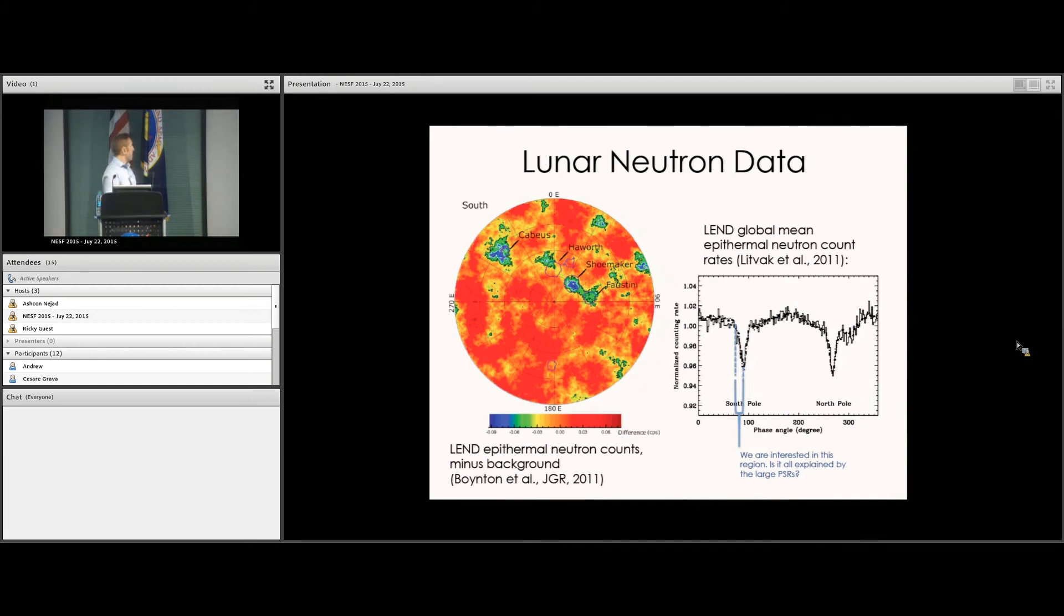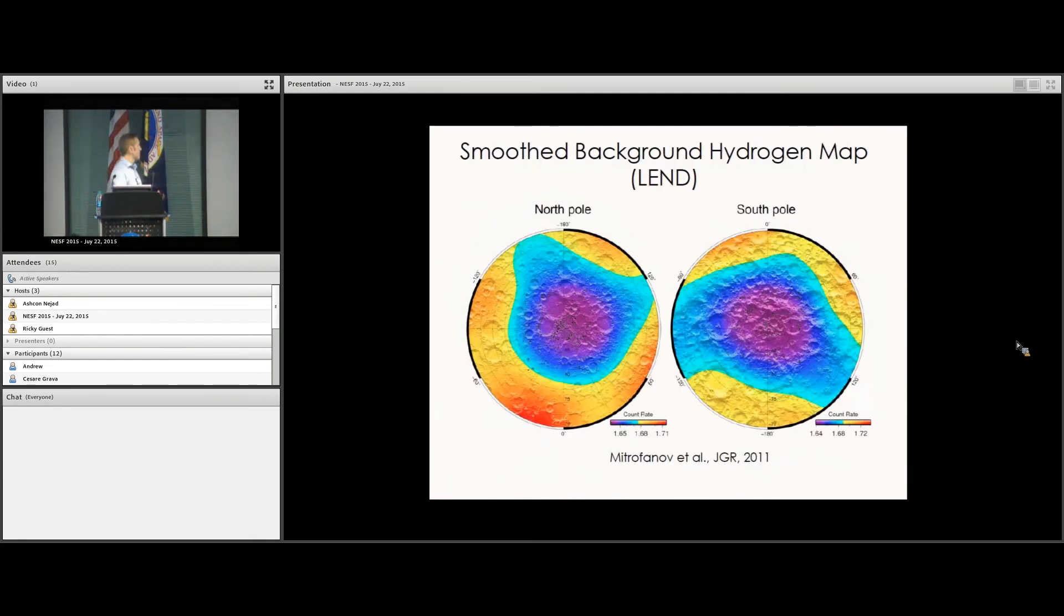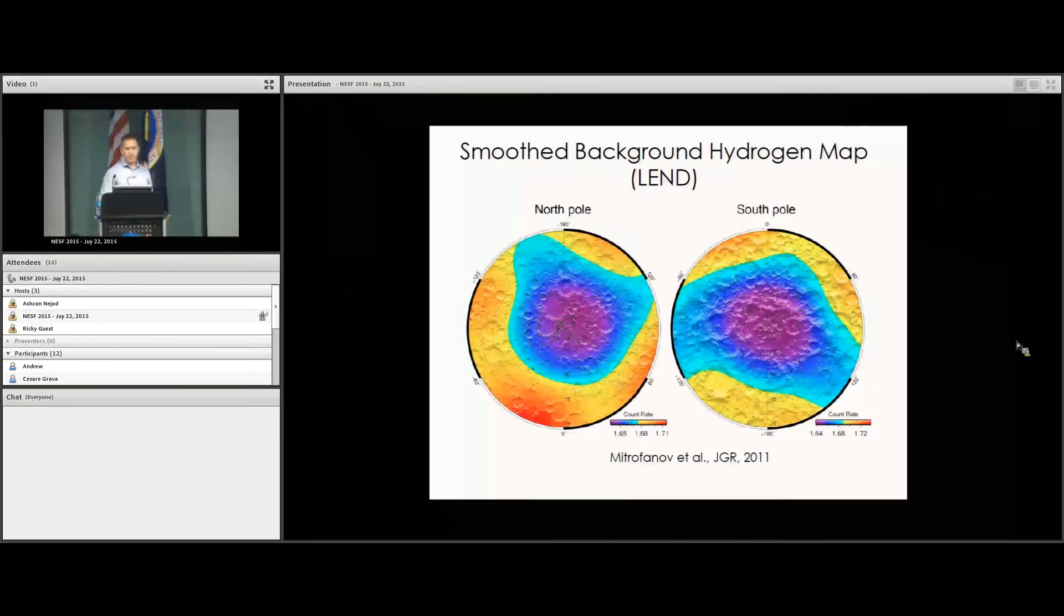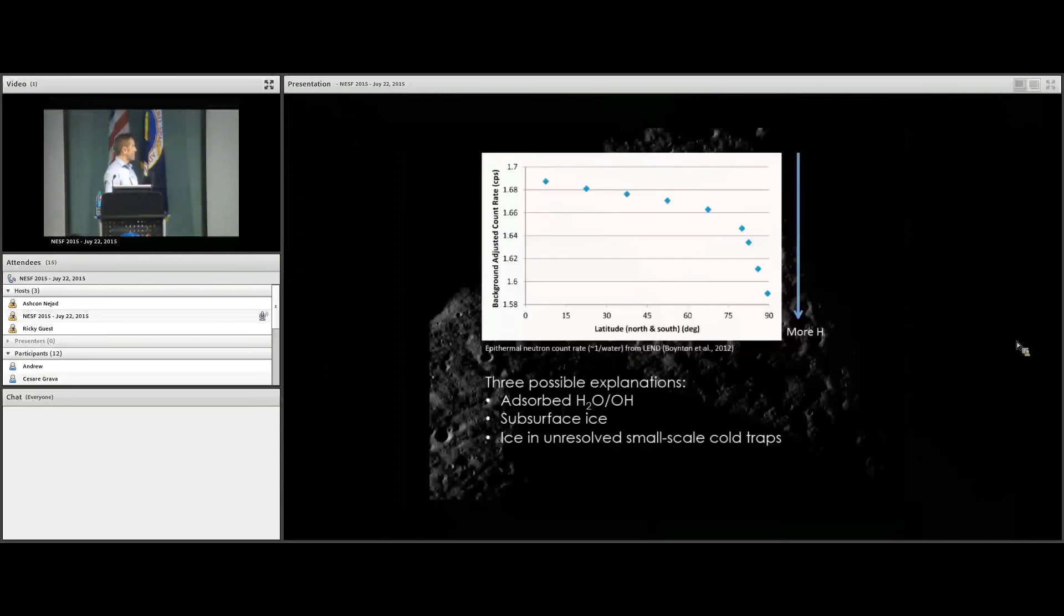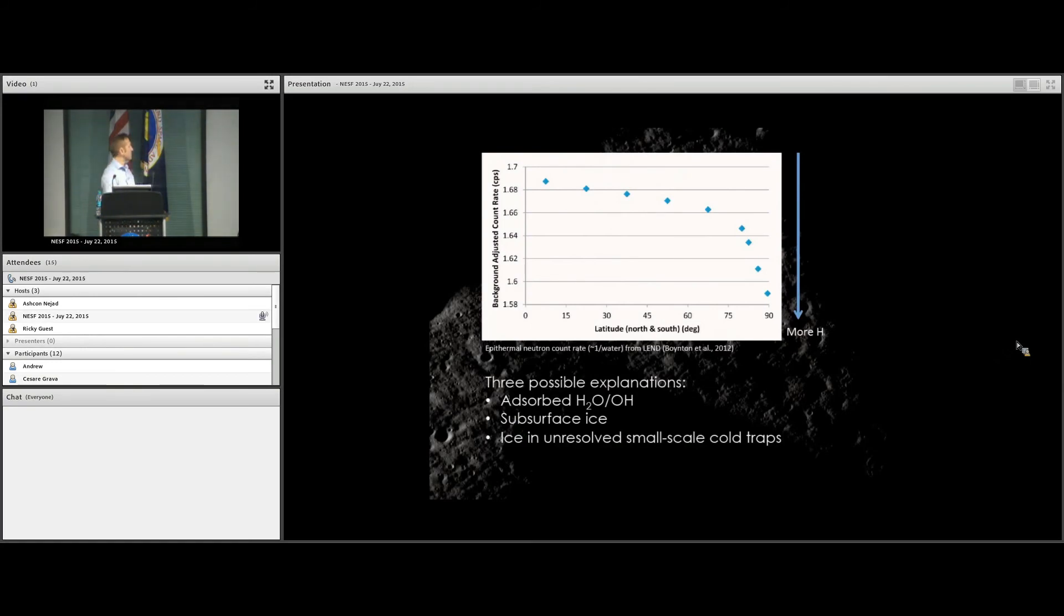What you see on the left is a map of neutron suppression from the LEND instrument on the Lunar Reconnaissance Orbiter. What is shown here is a difference from the background. That's important because if you add the background back in, that could be consistent with a general poleward increase in the hydrogen abundance. Basically as the spacecraft approached the poles, they didn't see blips for each individual cold trap. There's a general poleward decrease in the epithermal neutron flux, which is consistent with a general poleward increase in the amount of hydrogen in the regolith. Just generally over the polar regions there appears to be more hydrogen in the regolith.